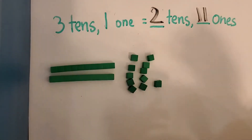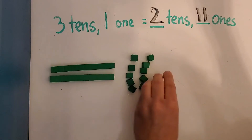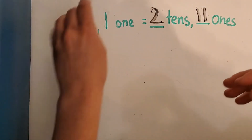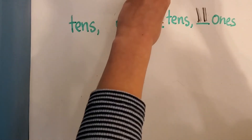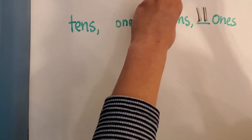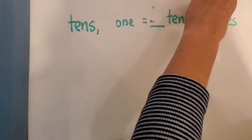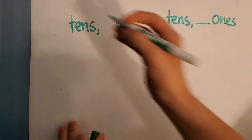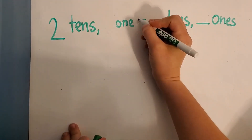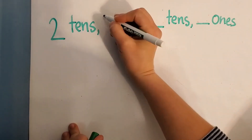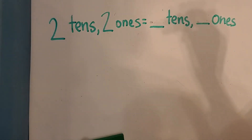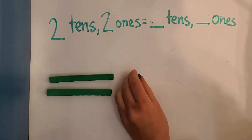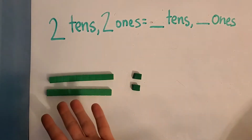Let's do one more and then you can go ahead and get started on your worksheet. It's always good to practice and review a few times, especially when you're first learning it, boys and girls. Always a good idea to do that. Let's do two tens and two ones. So let's bring our two tens back and put two ones here. Two tens, two ones.